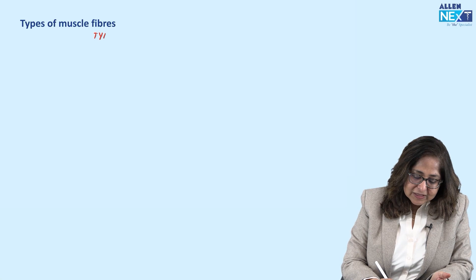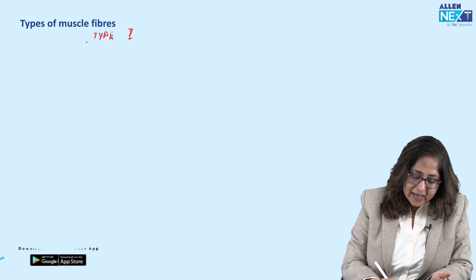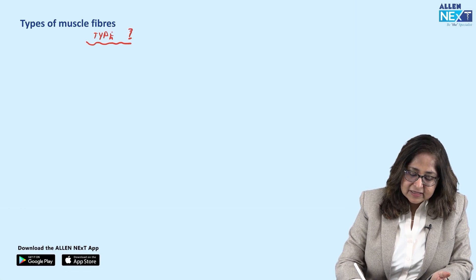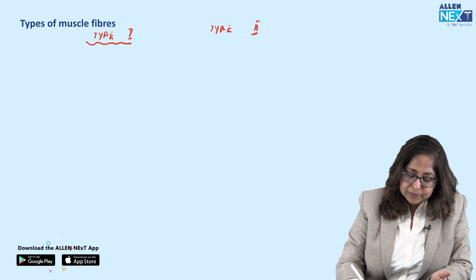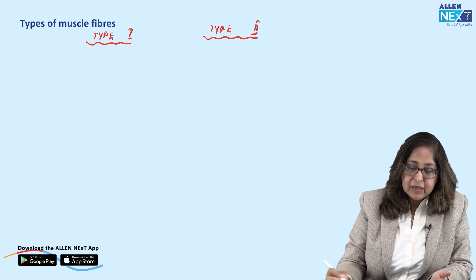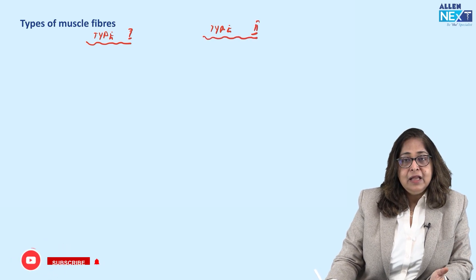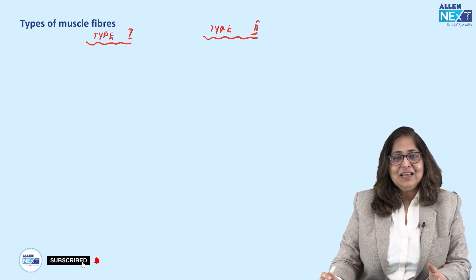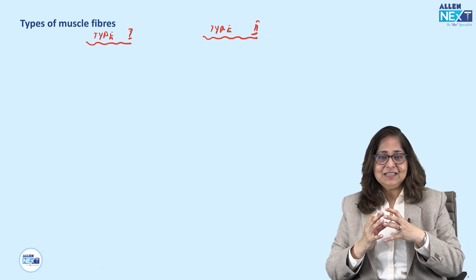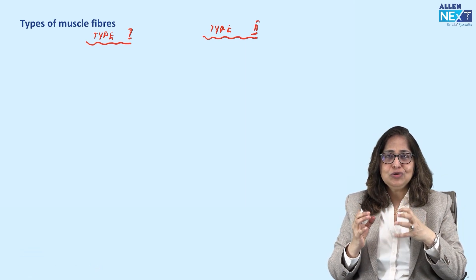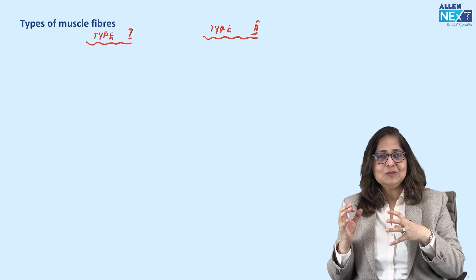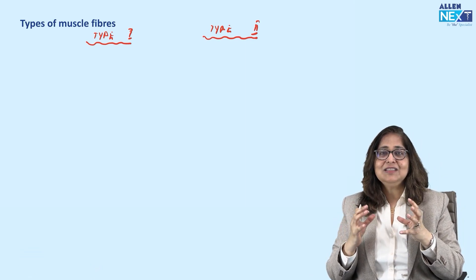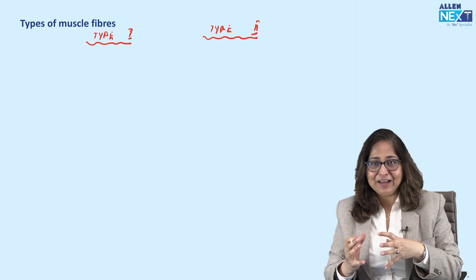There are two major types of muscle fibers: type 1 and type 2. Type 1 is a very thin fiber — it is slow, small diameter, and a very weak fiber.